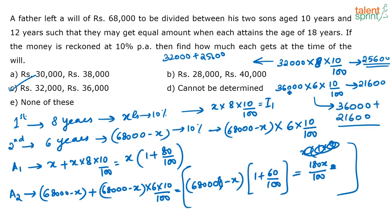Both these final amounts are the same — that is 57,600 rupees each — so this option is correct. When checking with options, you can verify all options this way. This method is easier because the question is quite calculative. Hope it is clear.